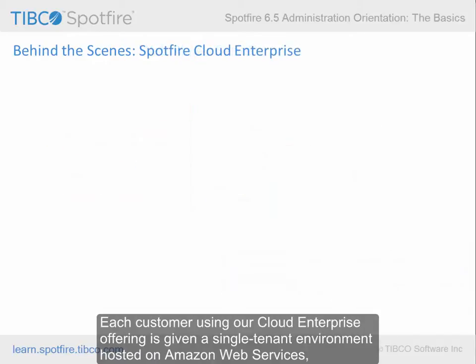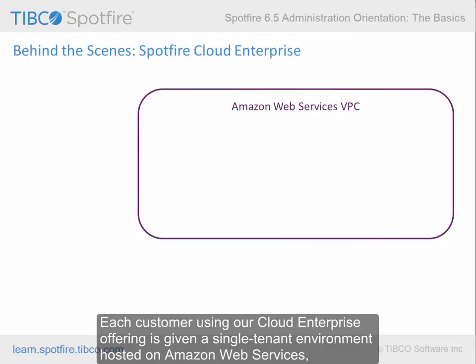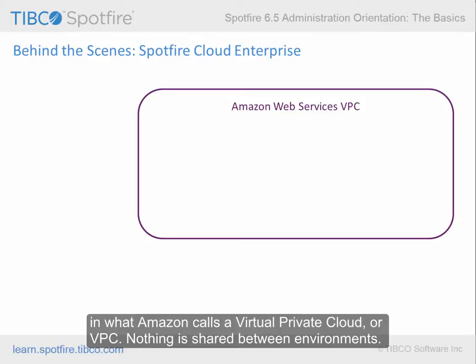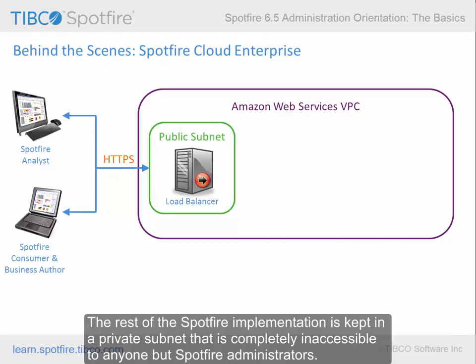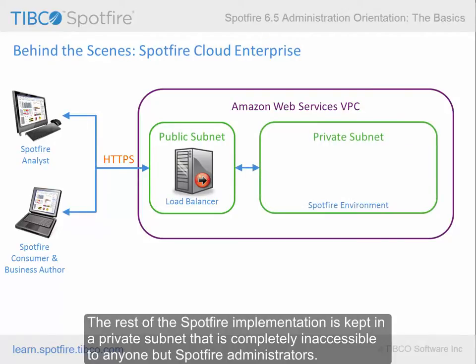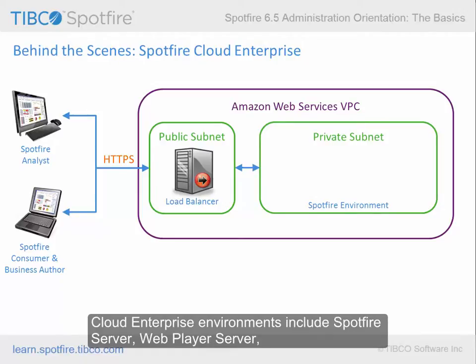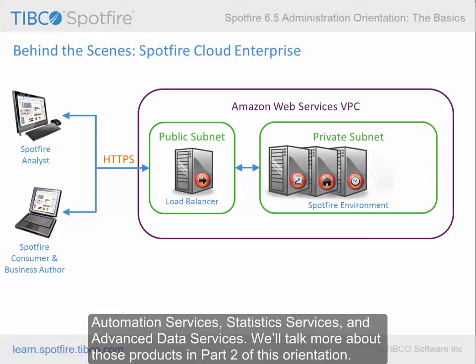Each customer using our Cloud Enterprise offering is given a single-tenant environment hosted on Amazon Web Services in what Amazon calls a Virtual Private Cloud, or VPC. Nothing is shared between environments. Clients connect to a load balancer in a public subnet by HTTPS. The rest of the Spotfire implementation is kept in a private subnet that is completely inaccessible to anyone but Spotfire administrators. Cloud Enterprise environments include Spotfire server, Web Player server, automation services, statistics services, and advanced data services.